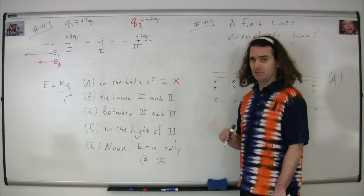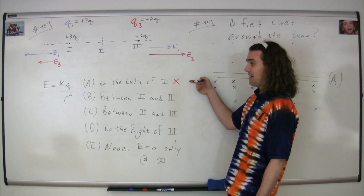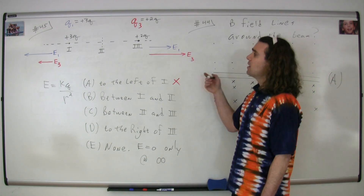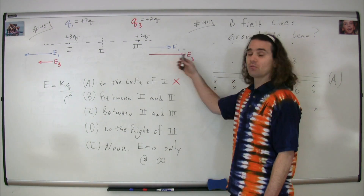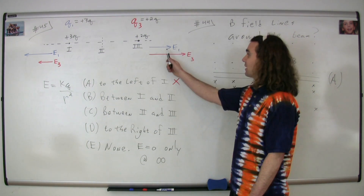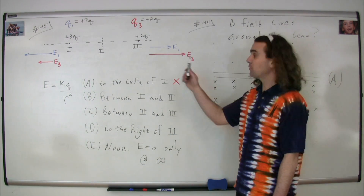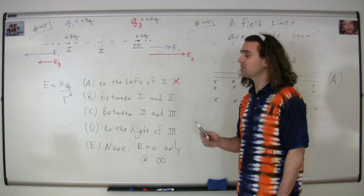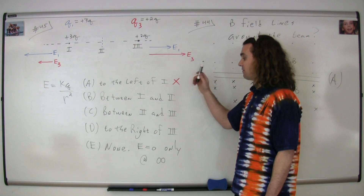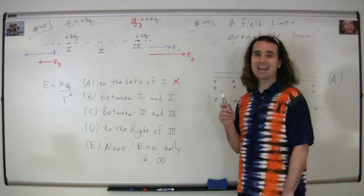Now let's look at to the right of charge three. We have the same issue as we had to the left of charge one. Because both charges are positive and this point is to the right of both charges, the electric field caused by charge one and the electric field caused by charge three are both going to be to the right, and therefore can never cancel out. So the electric field to the right of charge three can never be zero, and answer D cannot be correct.